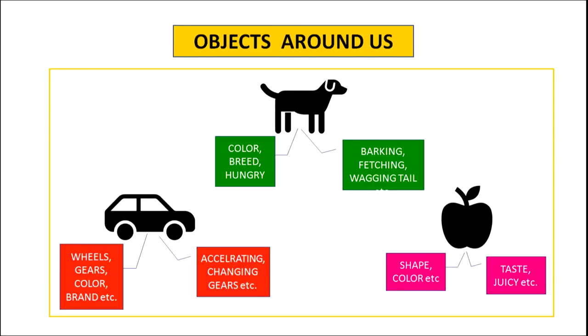If you simply look around yourself, you will find objects like table, chair, pen, car, fan, phone, etc. All these objects have certain attributes and behaviour. Their attributes are the characteristics of the object and behaviours are the functions which the object can perform.